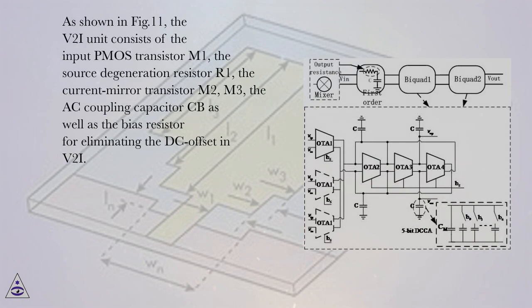As shown in Fig. 11, the V2I unit consists of the input PMOS transistor M1, the source degeneration resistor R1, the current mirror transistors M2 and M3, the AC coupling capacitor CB, as well as the bias resistor for eliminating the DC offset in V2I.